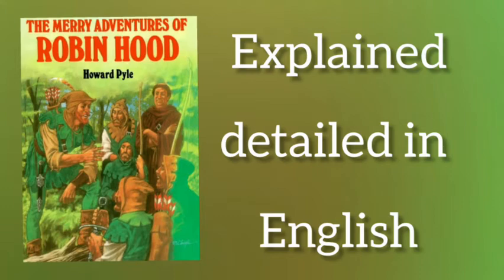Now let's get into the summary of the novel. The place in which the novel begins is Nottingham, England, and during that period England was ruled by King Henry II. Robin Hood is the main character, and the group of men who assembled with him are named the Merrymen.